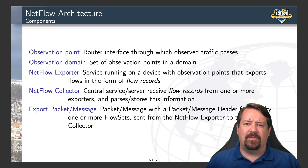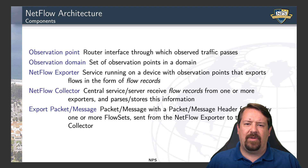On the router that is observing traffic, a NetFlow exporter will run — that's a service that periodically sends the flow data back to a central collection point known as the NetFlow collector. The collector is a server that receives this NetFlow data and stores it in a database for later analysis, or may even run some real-time analysis services. NetFlow also defines an export packet or message format, which can carry many NetFlow records in one packet back to the collector.